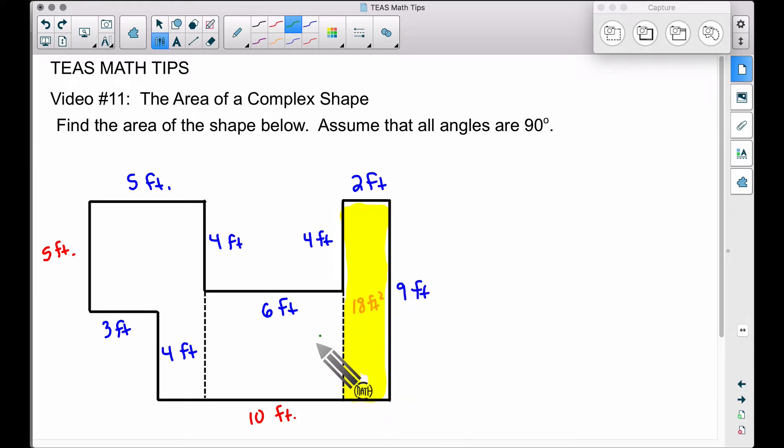Therefore, this little dotted section is 5 feet. And when we take 6 feet times 5 feet, we have 30 square feet.